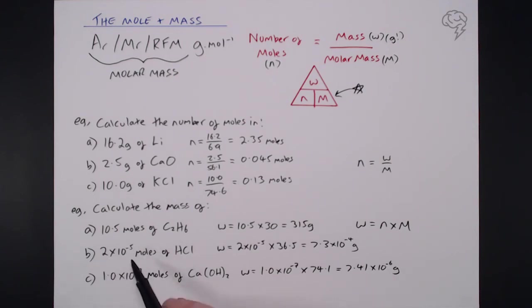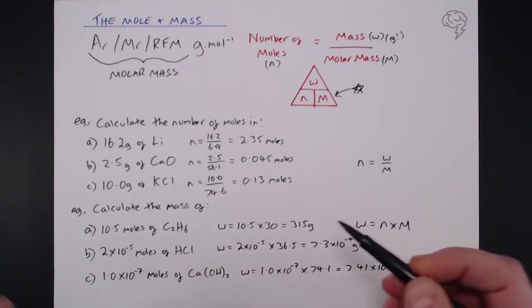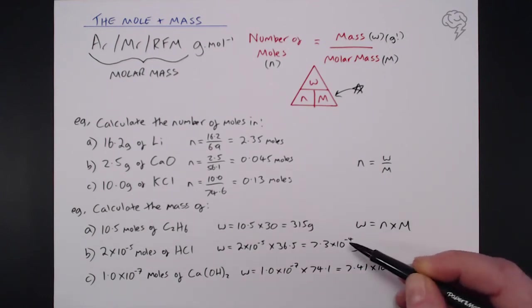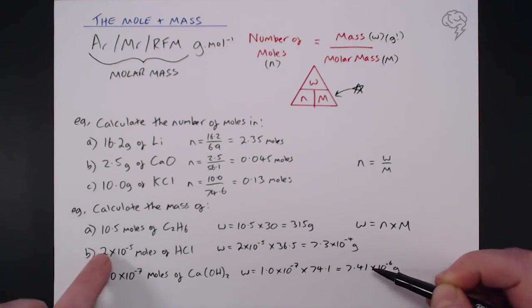Get used to using exponentials here because you're going to see them a lot in questions, but again you treat them exactly the same. We've got number of moles times molar mass for each of these and of course we're going to end up with really small masses here because we're dealing with small numbers of moles.